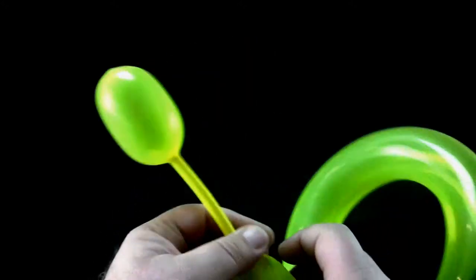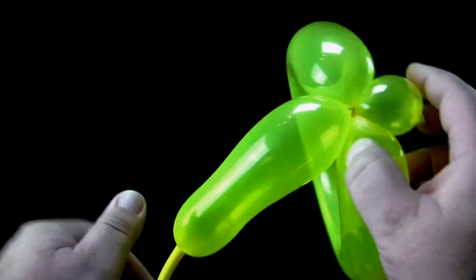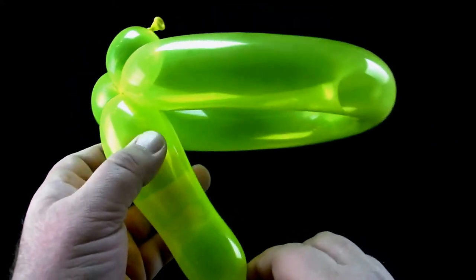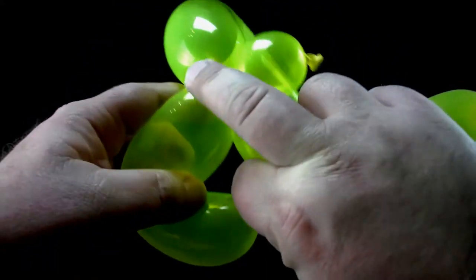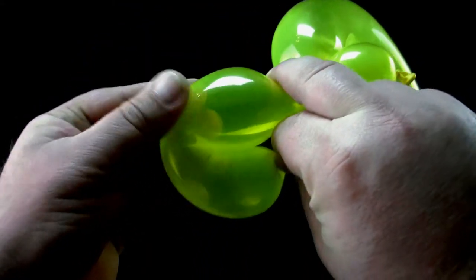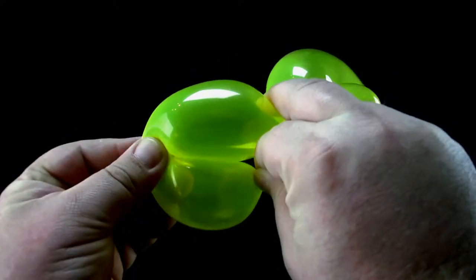Pinch the uninflated part of the balloon at the end of the bubble adjacent to the loop. Fold the loop in half and pinch along the outer side of the bubble to give the bubble a curve.